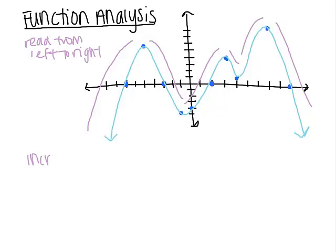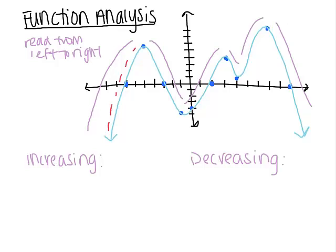We have an increasing interval and a decreasing interval. When the function is increasing, it means that from left to right the function would be going up. If we take a look at this piece right here, the function's going up. That slope is not constant — we can see that the function is curving — but all those different slopes are all positive.